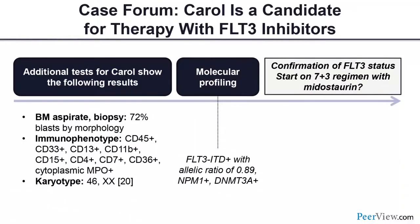Regarding FLT3 allelic ratio reporting: Yes, we should report it for all cases. Patients with high allelic ratio, especially without NPM1 mutation, are clearly unfavorable — the goal is to get them to transplant. Patients with low allelic ratio and NPM1 mutation may not need transplant, similar to core binding factor AML. For the FLT3-positive patient described: we get morphology, flow, cytogenetics rushed. We have a rapid 10-gene molecular panel returning in 72 hours — FLT3, NPM1, IDH1/2, TP53, CEBPA, RAS. I don't start treatment in most patients before getting that data.